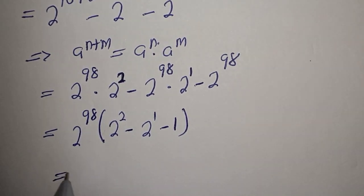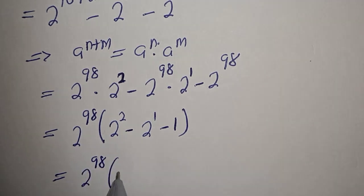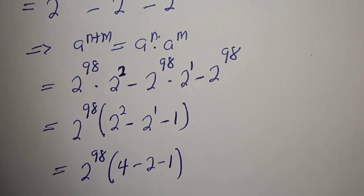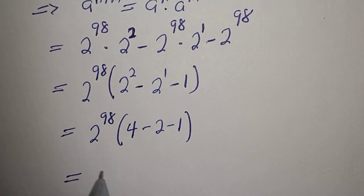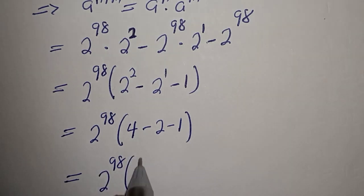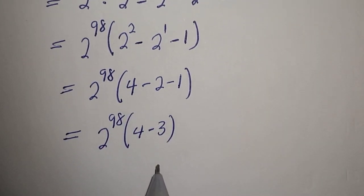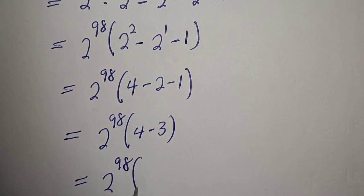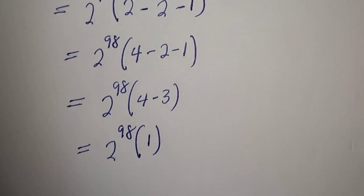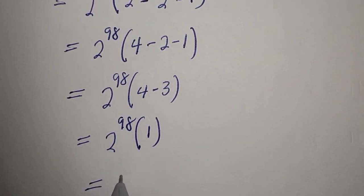So here is 2 raised to the power 98 bracket: 2 squared is 4, minus 2, minus 1. It is equal to 2 raised to the power 98 bracket 4 minus 3, equal to 2 raised to the power 98 multiplied by 1. And this is equal to 2 raised to the power 98, and this is the final answer.